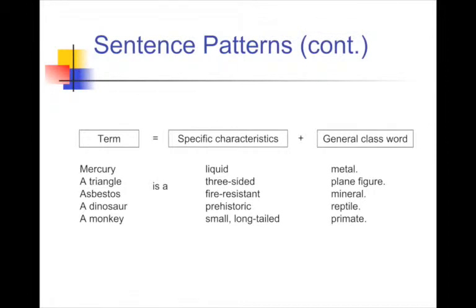Sentence patterns — here are more examples. Mercury, a triangle, asbestos, a dinosaur, a monkey. The specific characteristics can precede the general class, so it doesn't have to be general class then specifics — it can be reversed. A monkey is a small, long-tailed primate. A dinosaur is a prehistoric reptile. Asbestos is a fire-resistant mineral. A triangle is a three-sided plane figure. Mercury is a liquid metal. The general class comes last while specific characteristics come first.